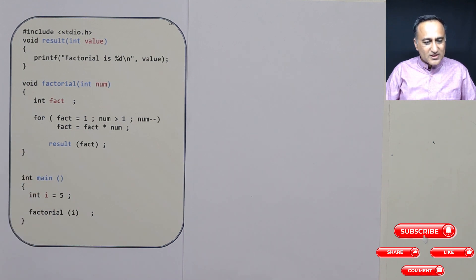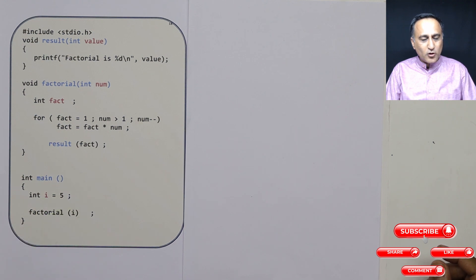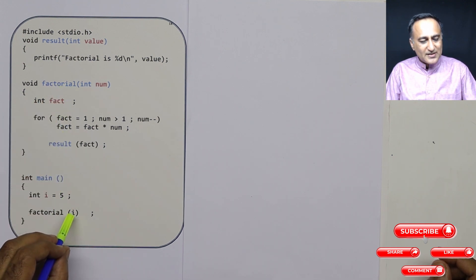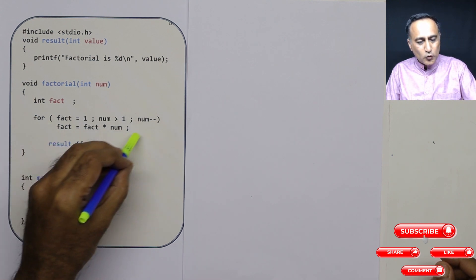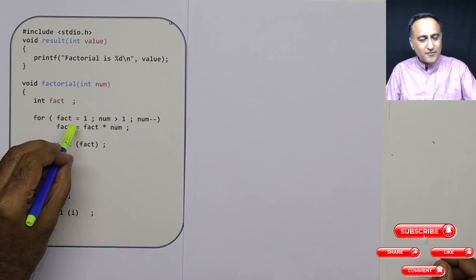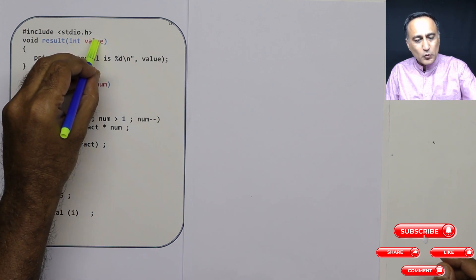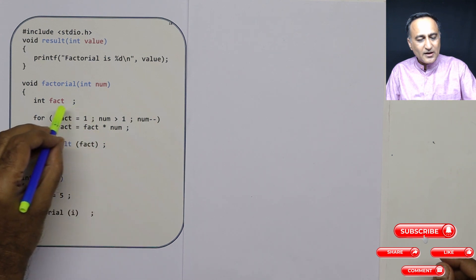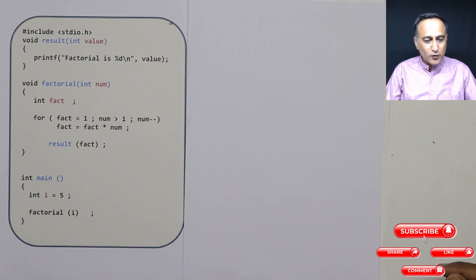Let's understand the call flow here. When I execute the program, the first function called by the operating system is main. Main has a local variable int i equal to five. Main in turn calls a function called factorial. Factorial receives i as a parameter, copied into number. I have an integer variable called fact, and using a for loop I calculate the factorial of five. To print the result, I call another function called result, passing fact, which gets copied into value. So the call flow was: main called factorial, factorial in turn called result.